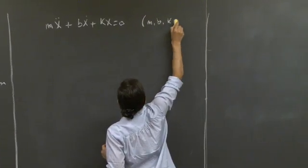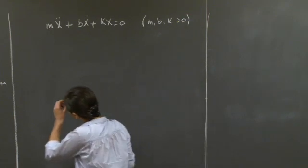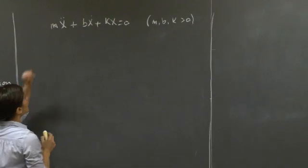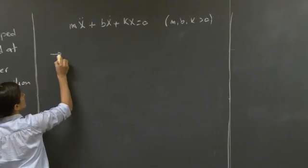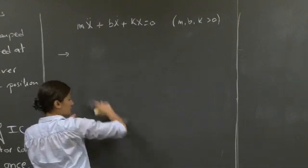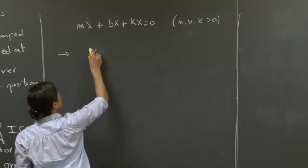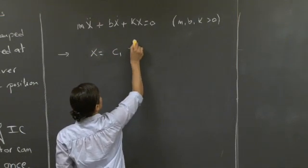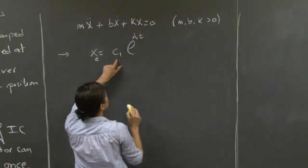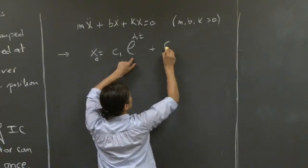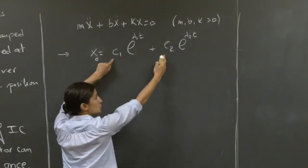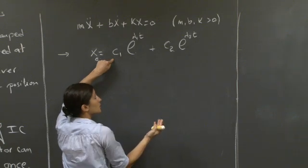Let's assume that we have positive constant coefficients. To solve this, we use the methods we saw before, and the general solution is written in the form C1 exponential lambda-1 t plus C2 exponential lambda-2 t, where C1 and C2 are two constants determined by the initial conditions.